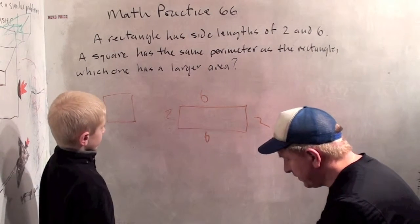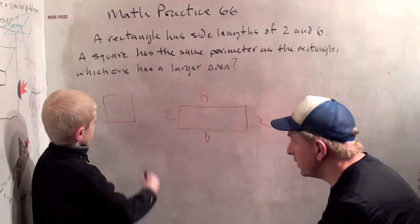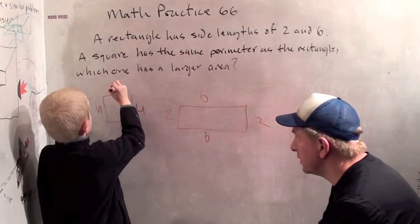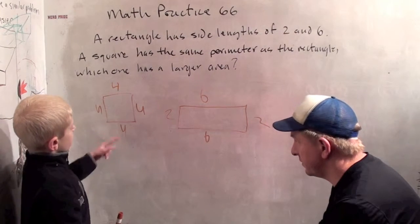And 4 plus 4 is 8, so the perimeter of the side length of one of these has to be 4.